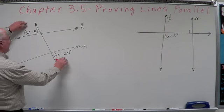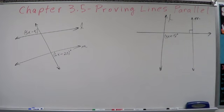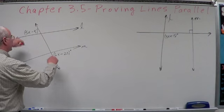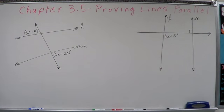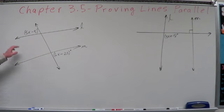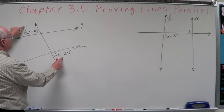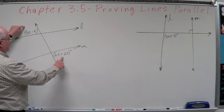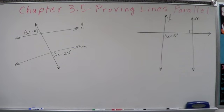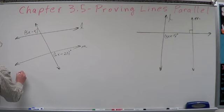This angle pair — they're exterior, they're outside the two lines, and they're on opposite sides. Opposite sides says alternate, so they're alternate exterior. Look back at your alternate exterior angle theorem. You're going to find that for the two lines to be parallel, these two have to be congruent. So what are we going to do with those two expressions? If they're congruent, we set them equal to each other.